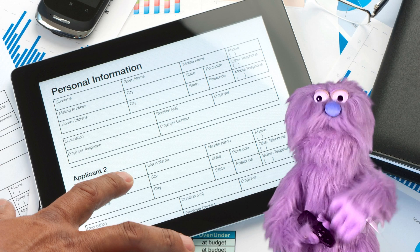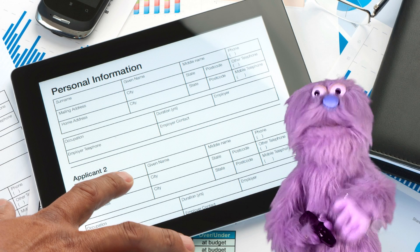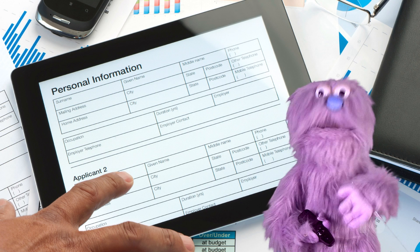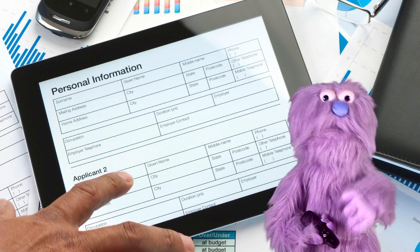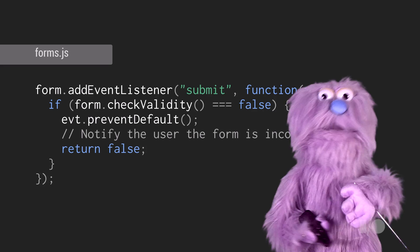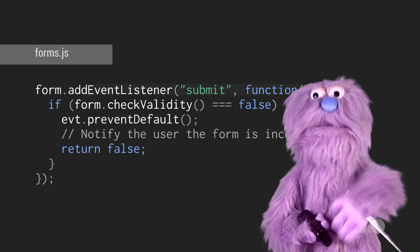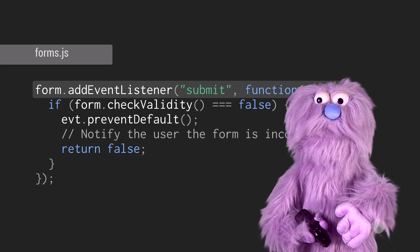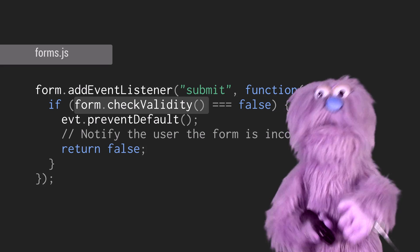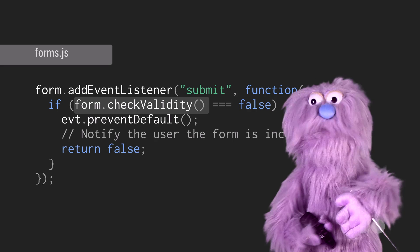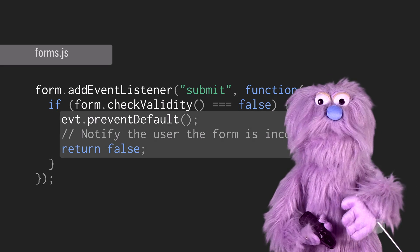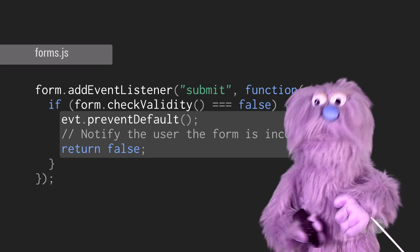But when built-in validation and regular expressions aren't enough, you can use the constraint validation API, a powerful tool for handling custom validation. To make sure the form is valid before it's submitted, catch the submit event, and then use the checkValidity function to make sure that everything is A-OK. If not, prevent the form from being submitted and tell the monster about all the problems. Otherwise, submit away.